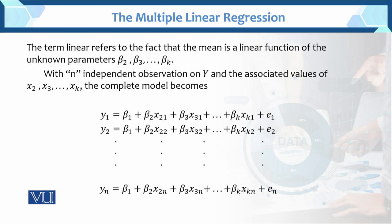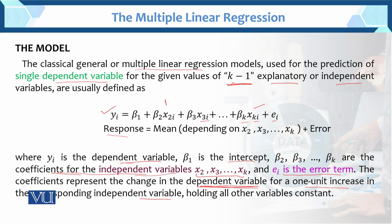This is the general scenario for writing this model. The term 'linear' refers to the effect being a linear function of the unknown parameters. With n independent observations on y and the associated values of x2, x3, ..., xk, the complete model becomes: y1 = β1 + β2·x21 + β3·x31 + ... + error; similarly y2, and so on up to yn (the nth observation). So the index i varies from 1, 2, ..., n.